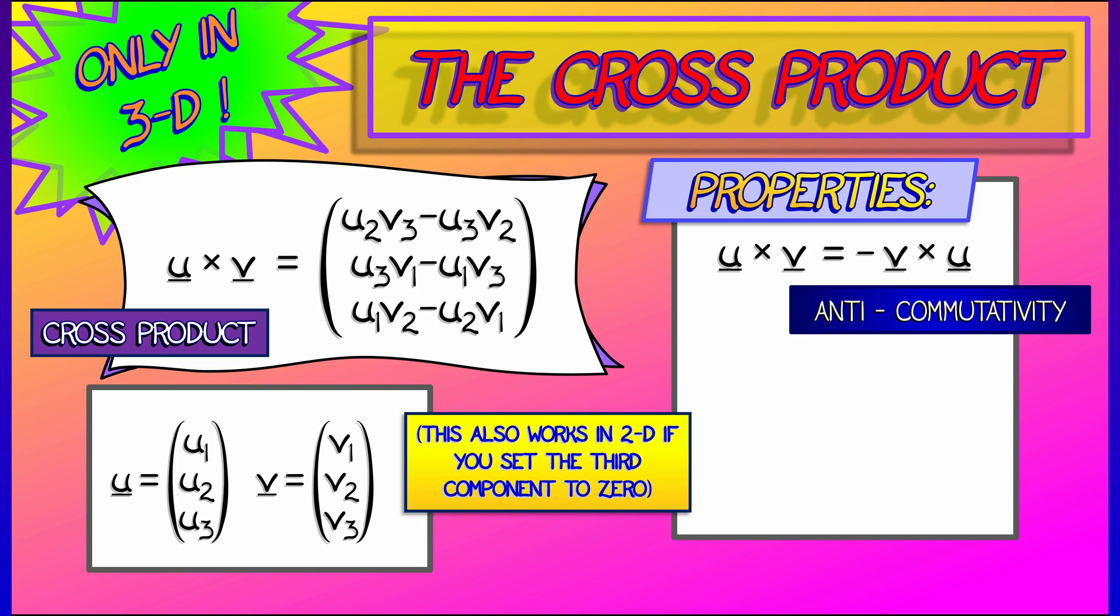Okay, there are some other properties as well. For example, if I take the cross-product of a vector u with the zero vector, then I always get the zero vector. Again, that should be clear from the formula.